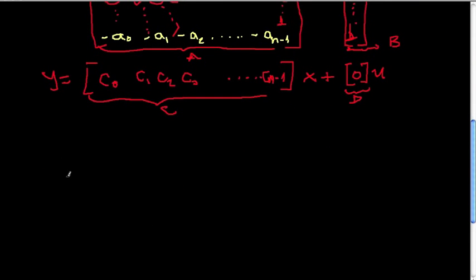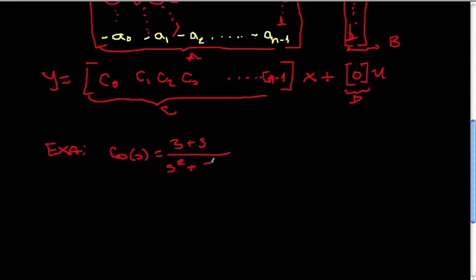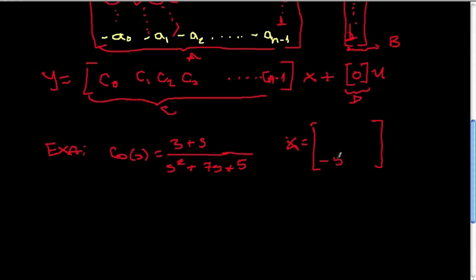Let's do an example. Consider the simple example where G(s) = (3 + s) / (s² + 7s + 5). This is a strictly proper transfer function with a second-order denominator, so n = 2. We get: ẋ = [−5, −7; 0, 1] x + [0; 1] u.